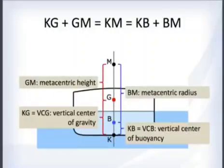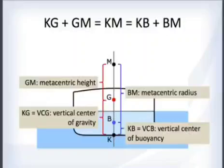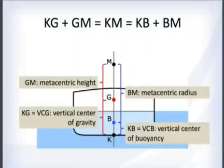KM, GM, KG, and KB all work together. If you have four of them, you can calculate the fifth. These are all properties of the ship.